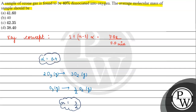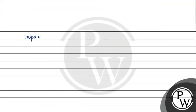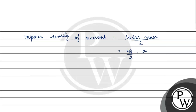हमारे पास N है, हमारे पास alpha है, और हमारे पास vapor density of reactant है। Vapor density किसके बराबर होती है? Vapor density बराबर होती है molar mass divided by 2 के। Molar mass अगर ozone का लें तो एक oxygen atom 16 gram per mole होता है, तो तीन oxygen atoms 48 gram per mole होते हैं। उसको divide करेंगे 2 से, तो हमारे पास आजाएगा 24 gram per mole।